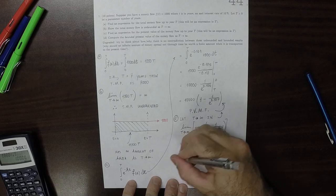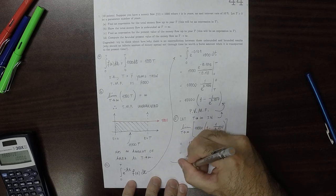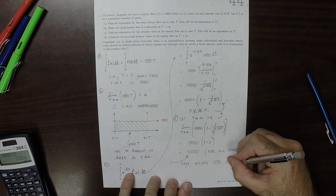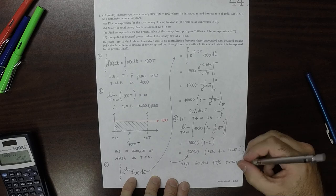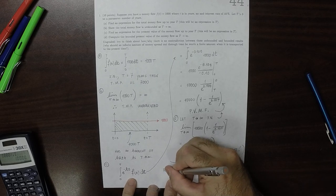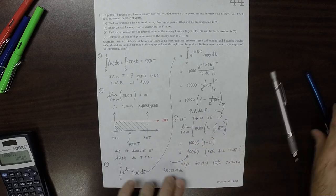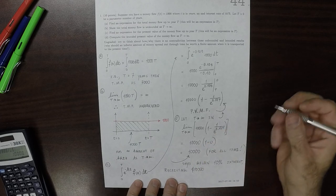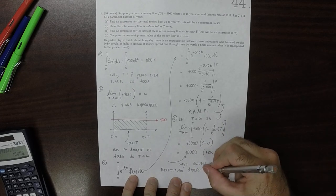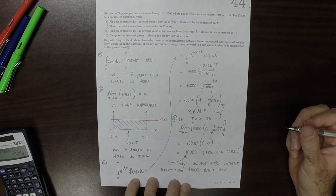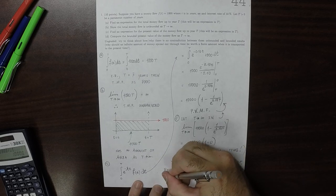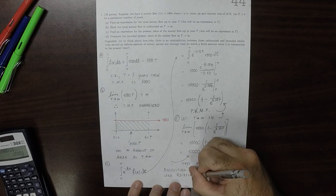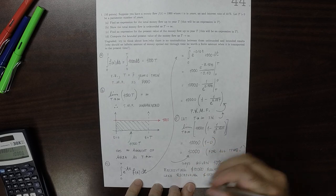This is saying, this says, that given a 10% interest rate, $10,000 right now is the same, or is like, receiving $1,000 every year, forever.